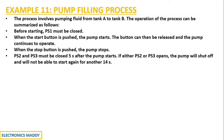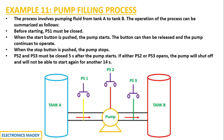Let us look at the diagram which can pictorially help us understand the requirement. There are two tanks A and B, and there is a pump that actually pumps the liquid from tank A to tank B through the switches PS1, PS2, and PS3. These switches control the flow of liquid from tank A to tank B. In addition to this, there are two other switches — start and stop — which will always be present in any process.